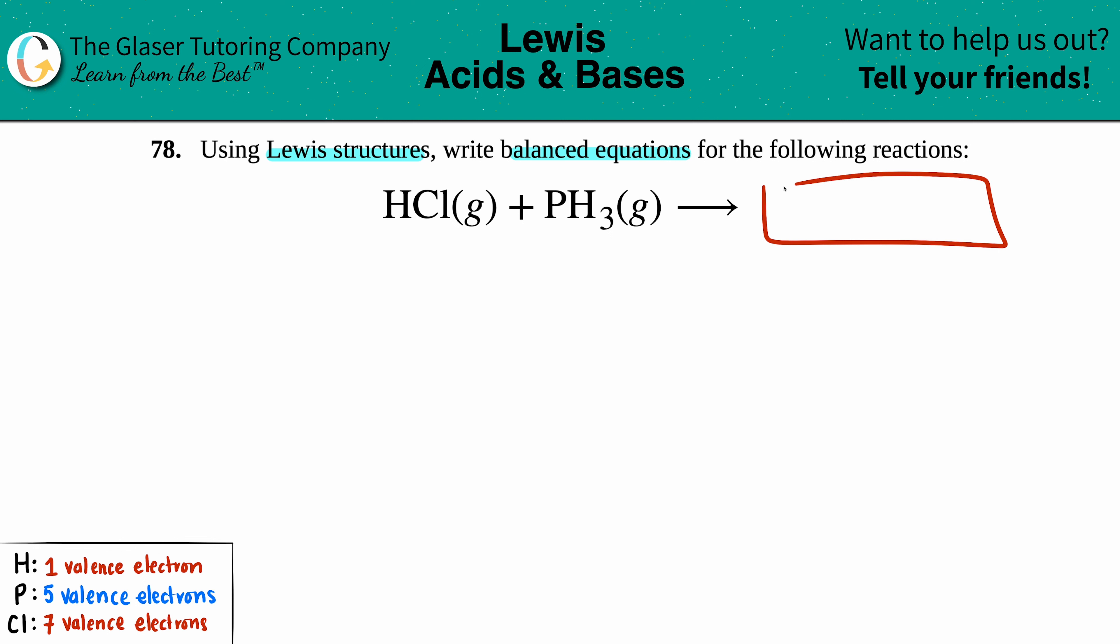Let's write the Lewis structures. Drawing Lewis structures is going to be a review—we spent a whole chapter on how to draw Lewis structures, which I believe is chapter seven. Just go back to the channel and find that chapter if you need more overview. For reference, I put down how many valence electrons each element needs in this example.